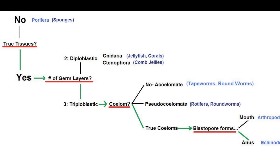This video is going to be addressing some of the embryological evidence for evolution. During development, organisms encounter several forks that they can either go one of two paths on. By examination of those paths, which ones are chosen, and the pattern that emerges, we can place an organism in its proper location in the phylogenetic tree.